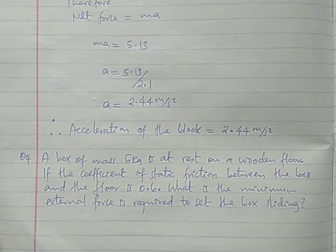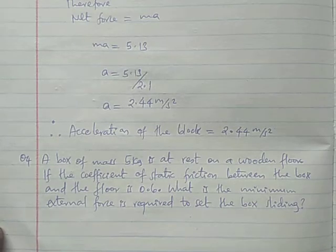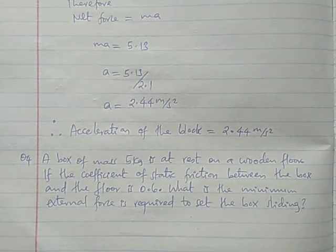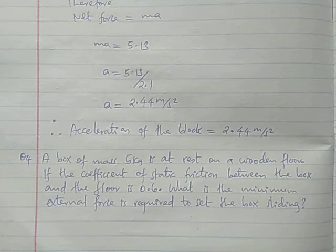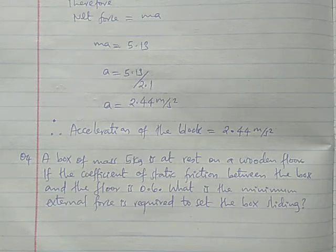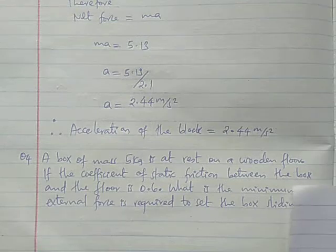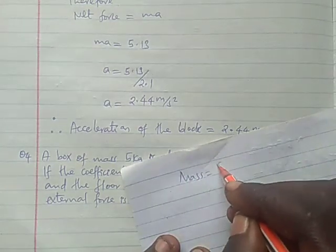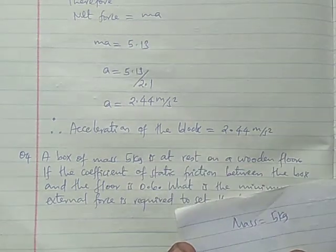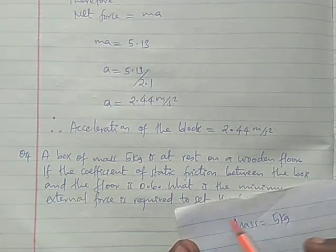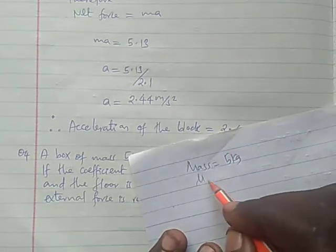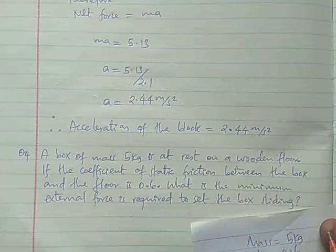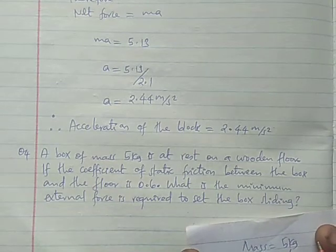So kwenye hi solved example, a box of mass 5 kg at rest on a wooden floor. If coefficient of static friction between the box and the floor is 0.6, what is the minimum external force required to set the box sliding? Tumepewa mass ni sasa sana 5 kg, na tumembiwa box require ni rest kwenye wooden floor ambayo coefficient yake mu s ni sasa sana 0.6.